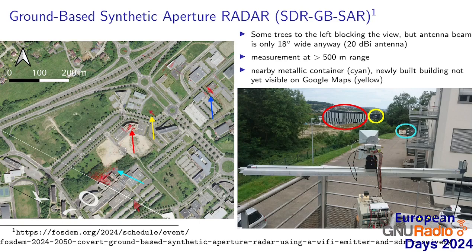To give you an example of a result: here is the antenna location, and we have four targets — a container, a building (which was actually built before this Google Maps image was updated), and one final far-away target behind trees, which are transparent to microwaves. So how do we best use the various capabilities of GNURadio to stream the data in this case to an Octave or Python script performing data collection, cross-correlation, and analysis?